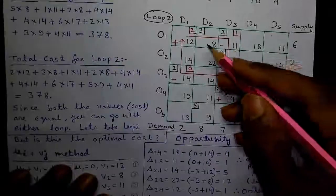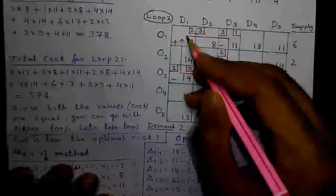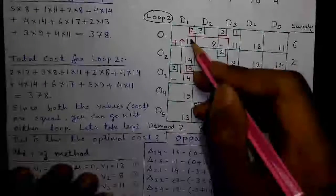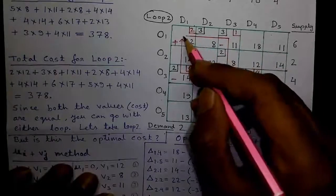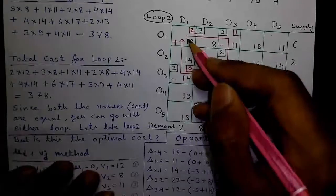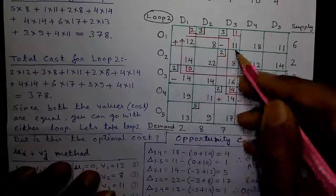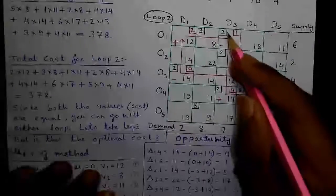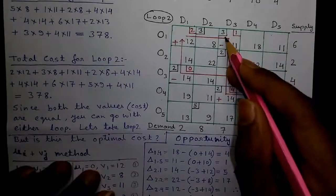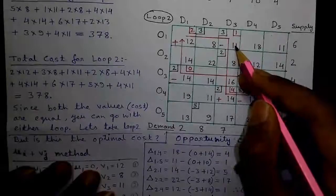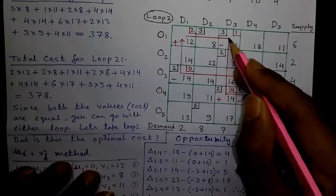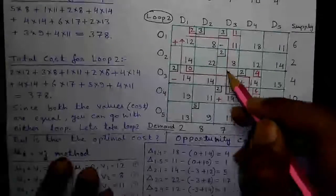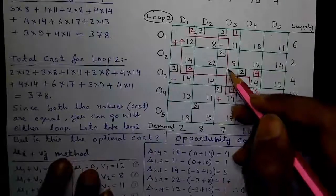Listen carefully — I will tell you the rules for looping. Rule number 1: the starting and ending cell of the loop must be an unallocated cell, and the loop must be a closed loop, meaning the starting and ending cell will be the same. Next, the loop will be drawn using straight lines, and the loop can bend but only at allocated cells — that is, cells which have any allocation. In other words, at each corner point of the loop there must be an allocated cell. And the next rule is that the loop can overlap.